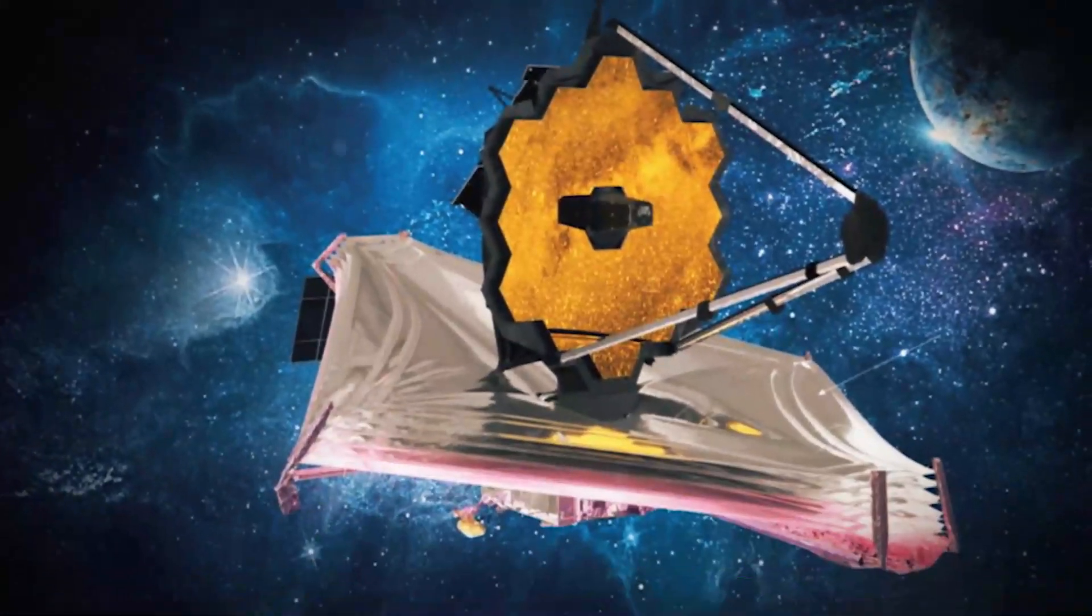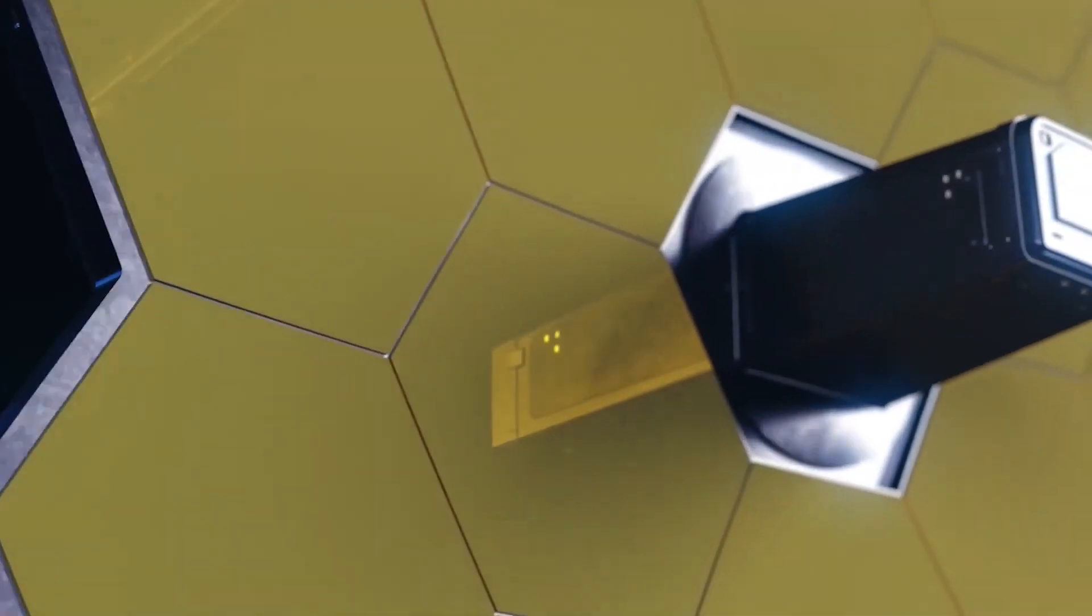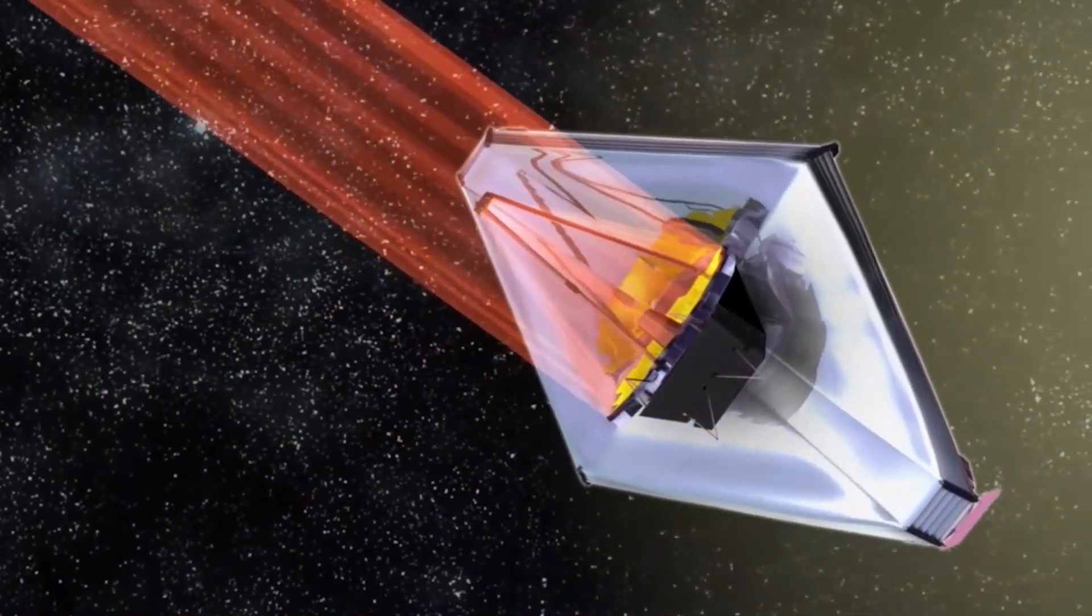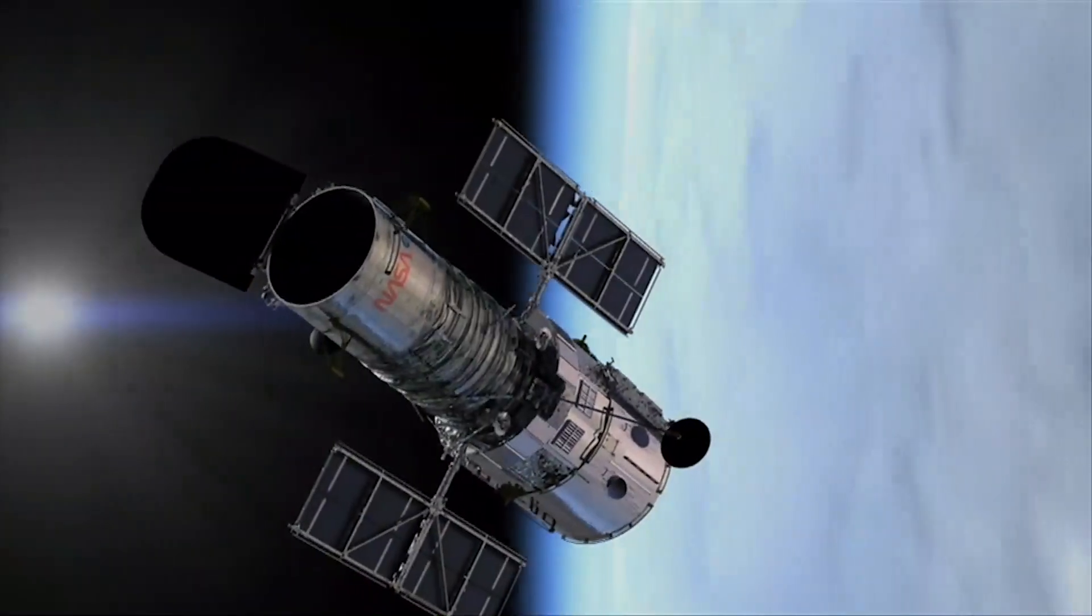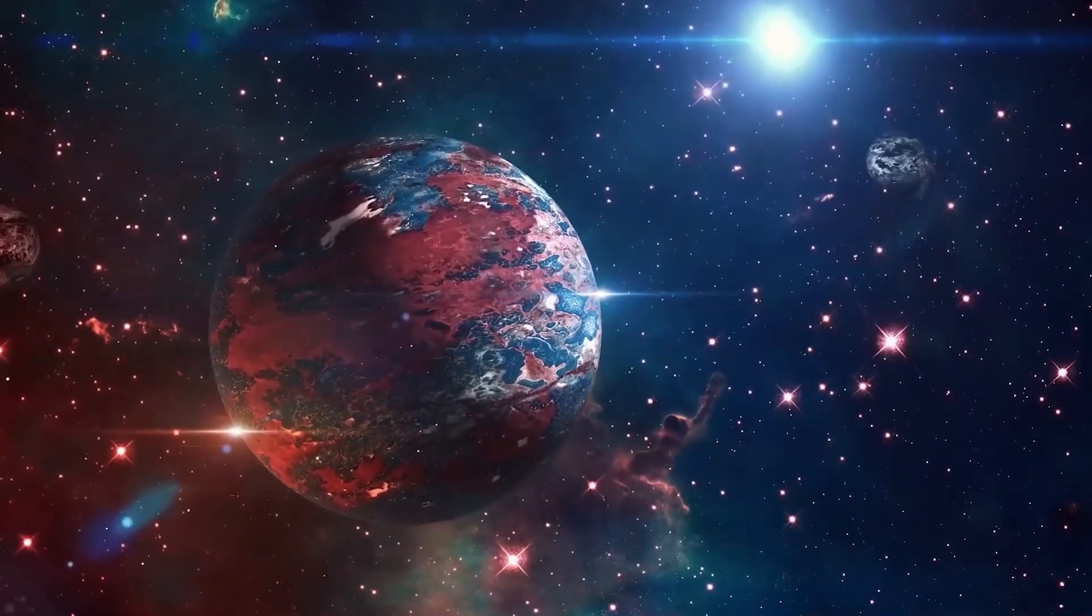What makes the telescope so special? Well, the JWST has a greatly improved infrared resolution and sensitivity, and it is so powerful it could view objects in space that are too old and distant for Hubble. It was touted that it could view some objects up to 100 times fainter.